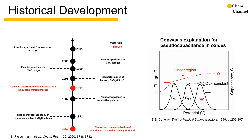Later, Conway explained the electrochemical behavior of RuO₂ thin film by introducing the overlap of several distinguishable successive states of electrochemical adsorption. Whether this hypothesis is the complete explanation still needs more experimental evidence. However, pseudocapacitance has been closely tied to the highly reversible storage of ions in transition metal oxides since then.